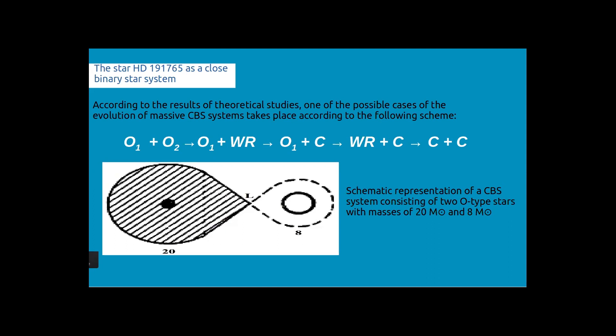Due to this evolution process, the more massive component in the beginning turns to the less massive component after a certain period. This case was first observed in Algol type stars. That's why in scientific literature, this phenomenon is called the Algol paradox, or the theory of change of roles.